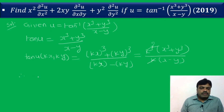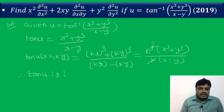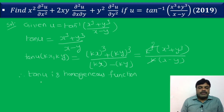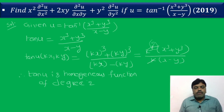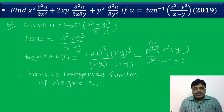Therefore, the conclusion is: tan u is a homogeneous function of degree 2.